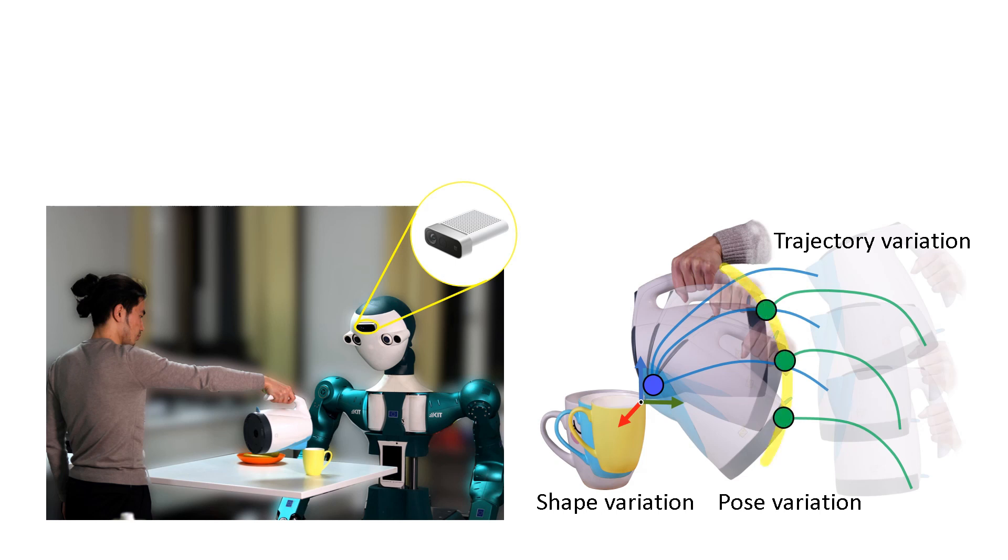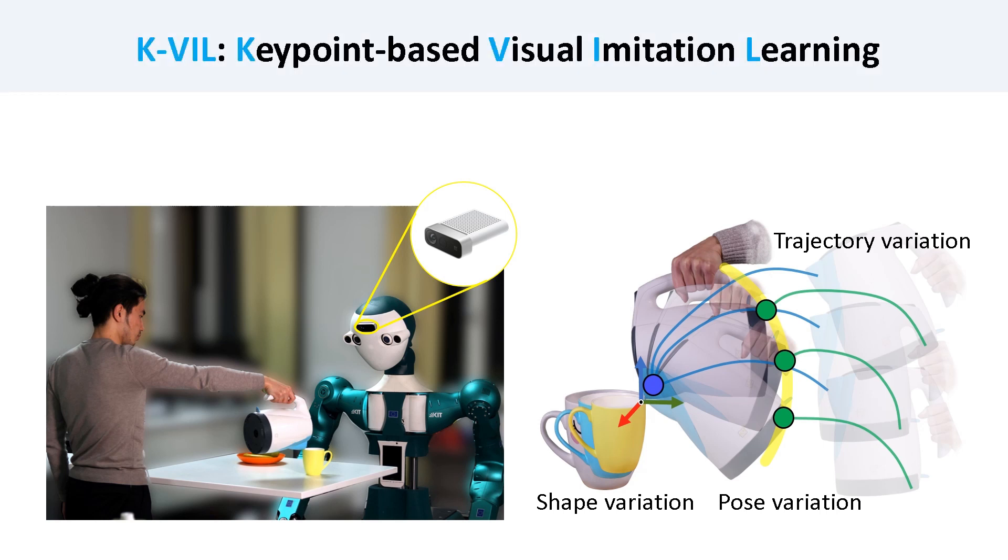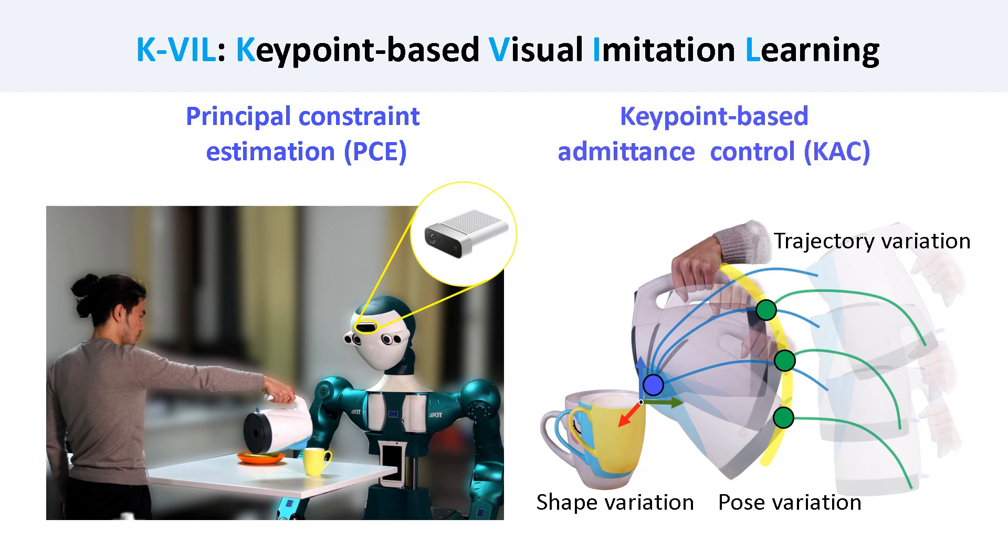To address this problem, we propose a novel keypoint-based visual imitation learning approach. It consists of two parts: the Principal Constraint Estimation jointly extracts the local frames, keypoints, their motions and constraints from demonstration videos, and then the Keypoint-based Admittance Controller reproduces the learned task on the robot.